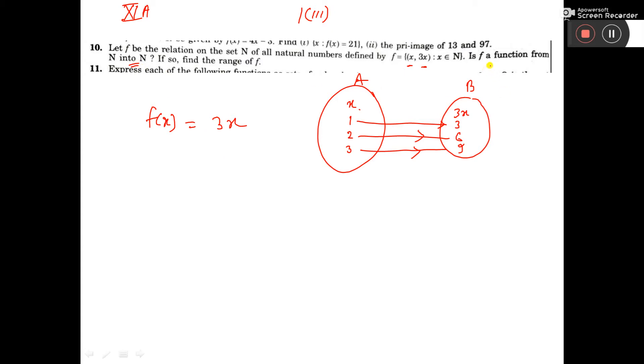The question is, is f(x) a function from N to N? Yes, this is a function. If so, find the range. Range means the second set's values. So the range equals 3, 6, 9, and so on, continuing in this way.